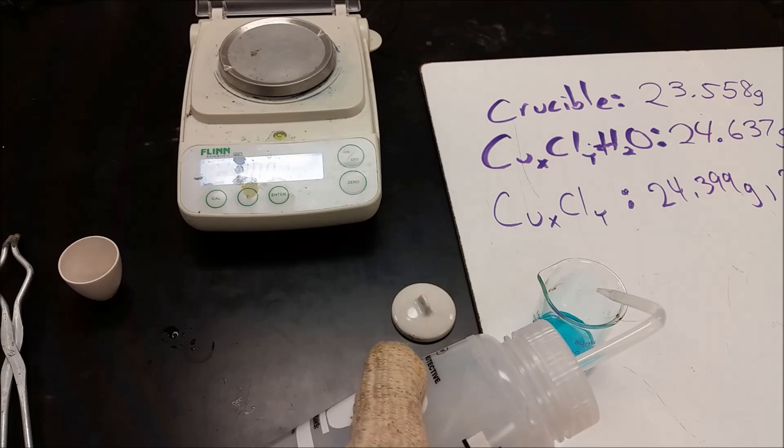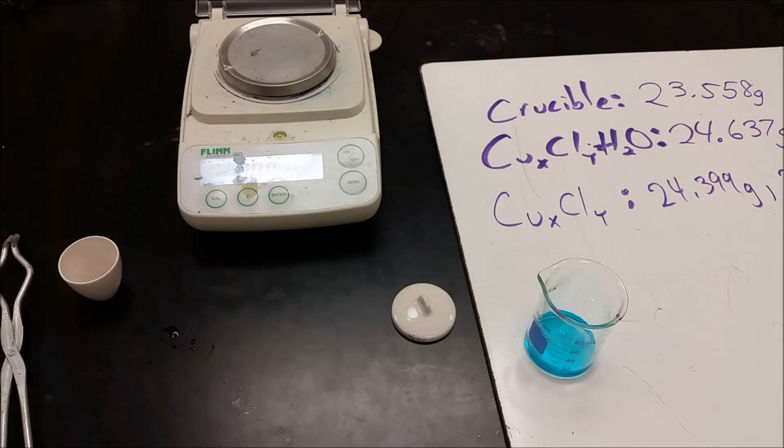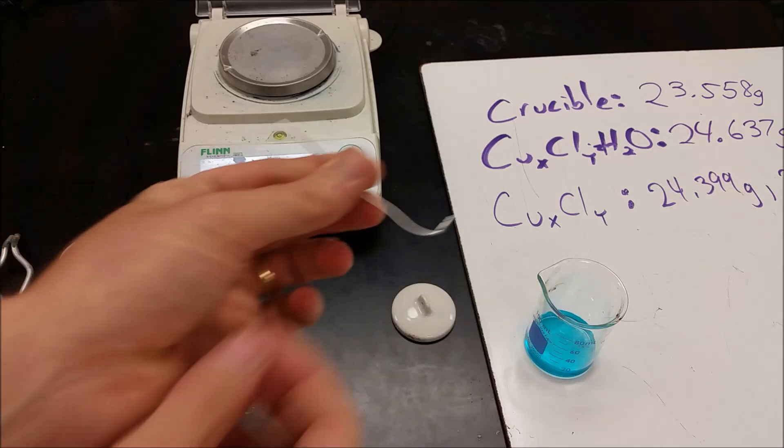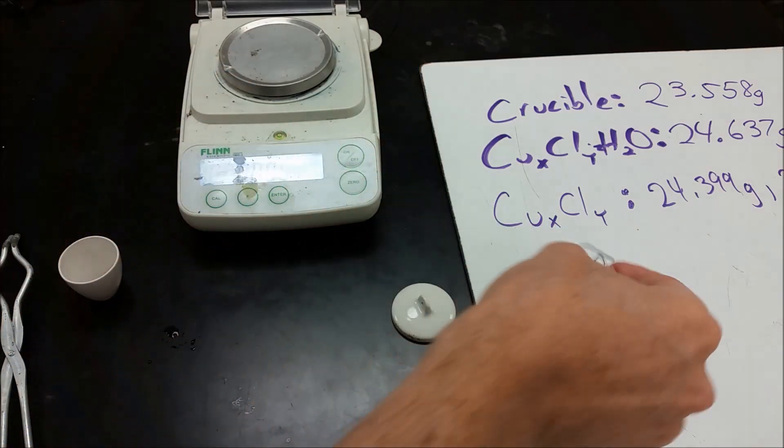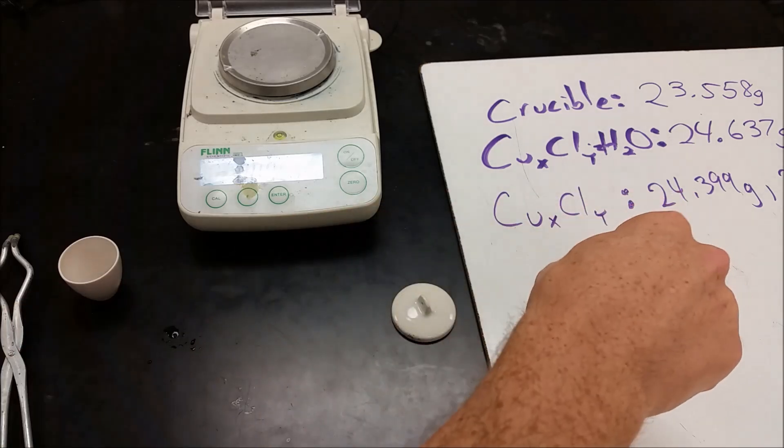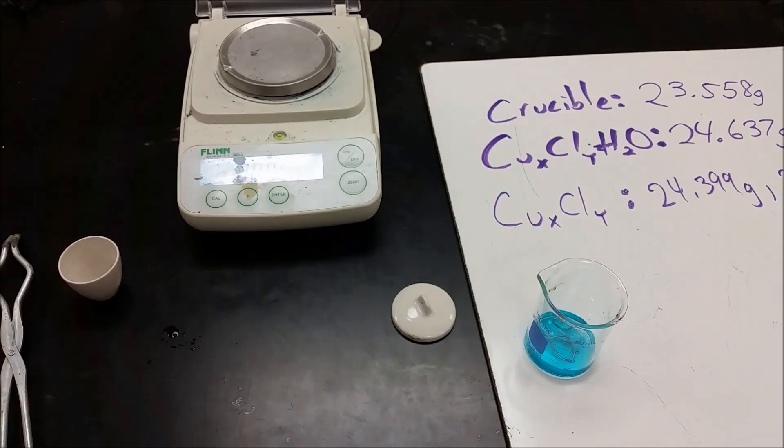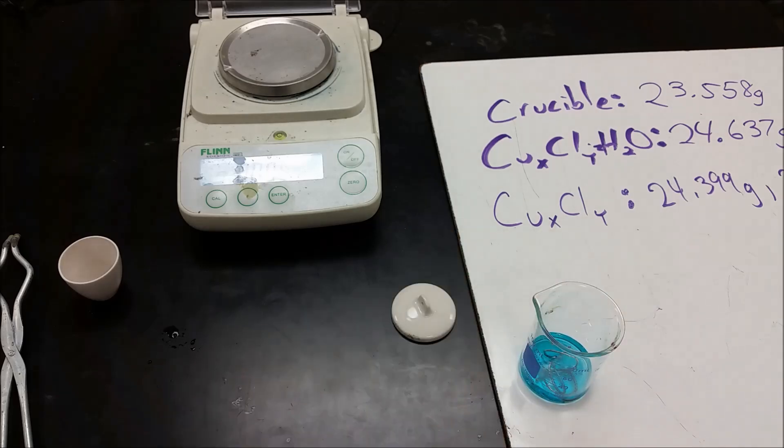So now what we want to do is we want to isolate either the copper or the chlorine. So to do that, what we're going to do is we're now going to add some aluminum wire that's going to displace the copper. And then we're going to end up filtering that. So you want to be careful with the ends here. We're going to bend it away from the ends because they're sharp. We're going to stick those pieces in there. And we're going to leave them in there until the solution goes from blue to colorless. I'll go ahead and zoom in here so we can see this.